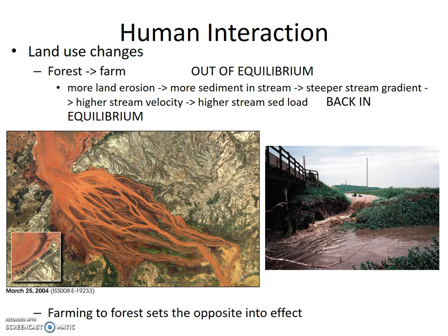Farming to forest causes the opposite effect. Suddenly the stream becomes sediment-starved, meaning it can carry more sediment than it is carrying. Streams will not starve themselves if they can help it — they will pick up sediment if it is available. And in this case it is. The sediment they pick up is the sediment deposited on the bed when the forest was changed to a farm.